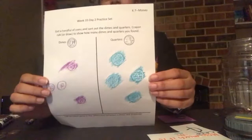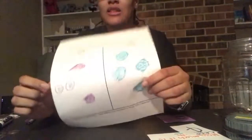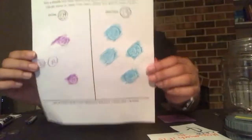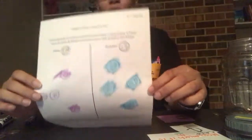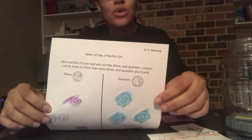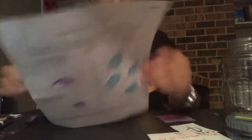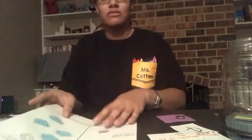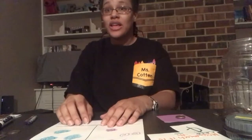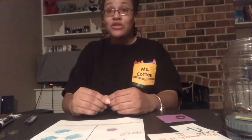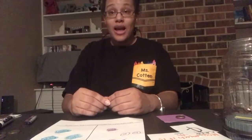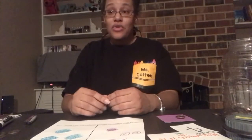So this is your practice set. On the bottom it says: tell an adult what is the difference between a dime and a quarter. We kind of talked about it in our lesson, so you can tell an adult something you find that is different between a dime and a quarter.